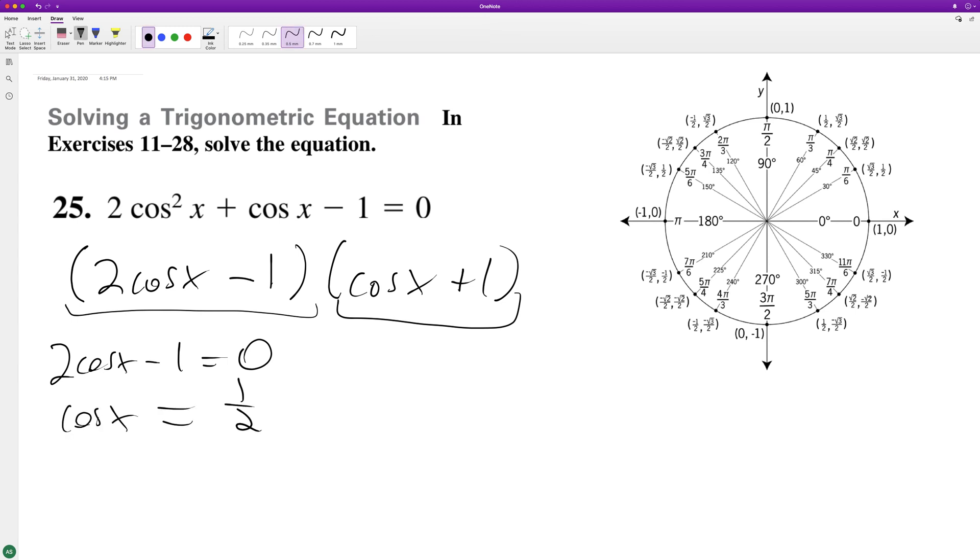Cosine of x is equal to one half at pi over three and five pi over three. Cosine of x is equal to negative one at pi.